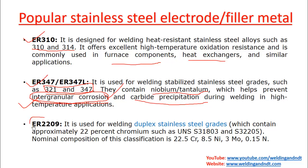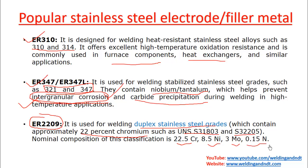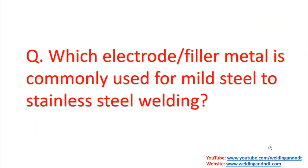ER2209 Ni is used for welding duplex stainless steel grades with approximately 22 percent chromium, such as UNS S31803 and S32205. Its nominal chemical composition is 22.5 percent chromium, 8.5 percent nickel, 3 percent molybdenum, and 0.1 percent nitrogen. These are the popular stainless steel electrodes and filler metals.